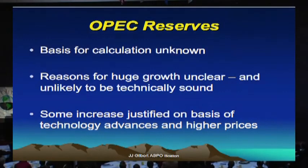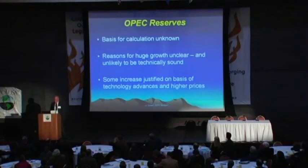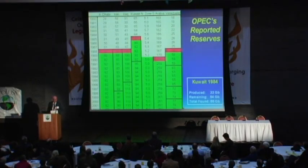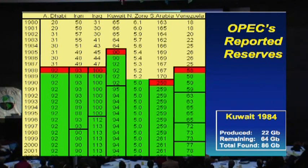On OPEC reserves: we don't really know how they're calculated, nor why the huge growth in reported numbers has taken place. I believe it's technically unlikely and not technically sound. Some increase in OPEC reserves over the years is certainly justified by technology advances and higher prices, but not to the extent we've seen. OPEC reporting has produced a series of numbers which make little technical sense. ASPO's best estimate is that OPEC is currently overreporting its reserves by about 300 billion barrels. I showed these slides to the Acting Secretary General of OPEC a few months ago — he was not pleased, but was unable to disprove it.